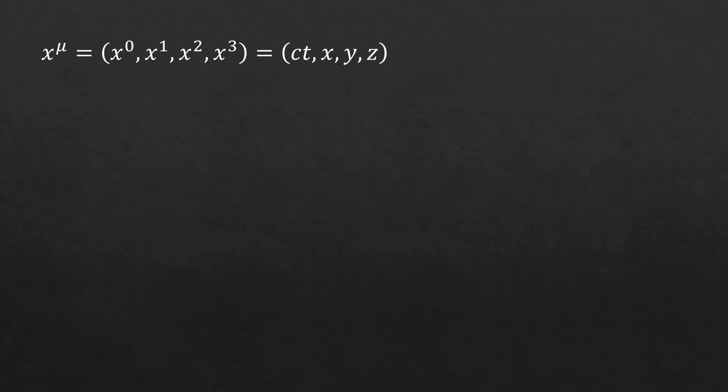Before we start, I want to make sure that you know the vector notation. This is the four space vector x to the mu, which each element represents one of the space-time dimensions. So this index mu varies from 0 to 3. And it's easier for us, humans, to understand when we define the dimensions spatially. So the time dimension will be multiplied by the speed of light. So it's also expressed as another spatial dimension.